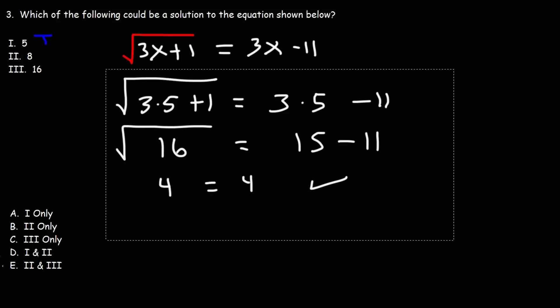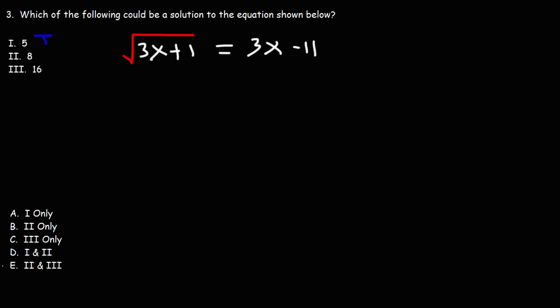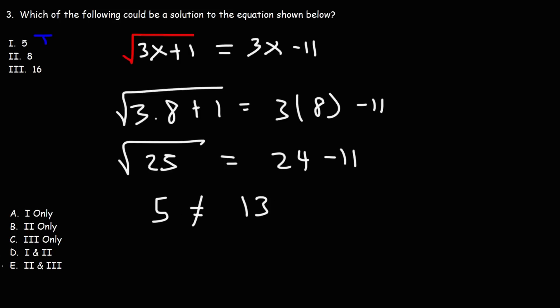Now, let's try the second one. Let's replace x with 8. 3 times 8 is 24 plus 1. That's 25. Here we have 24 as well. The square root of 25 is 5. 24 minus 11, that's 13. 5 does not equal 13. So, the second solution is false.